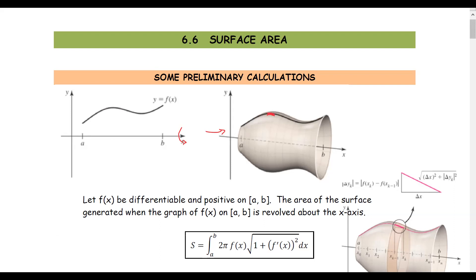By looking at one segment and using the slice and sum technique, for one segment rotated about the x-axis, it will form a band wrapping around the object. To find the area of this band, assume it looks like a band of paper. We open it up, and it will form a rectangle.